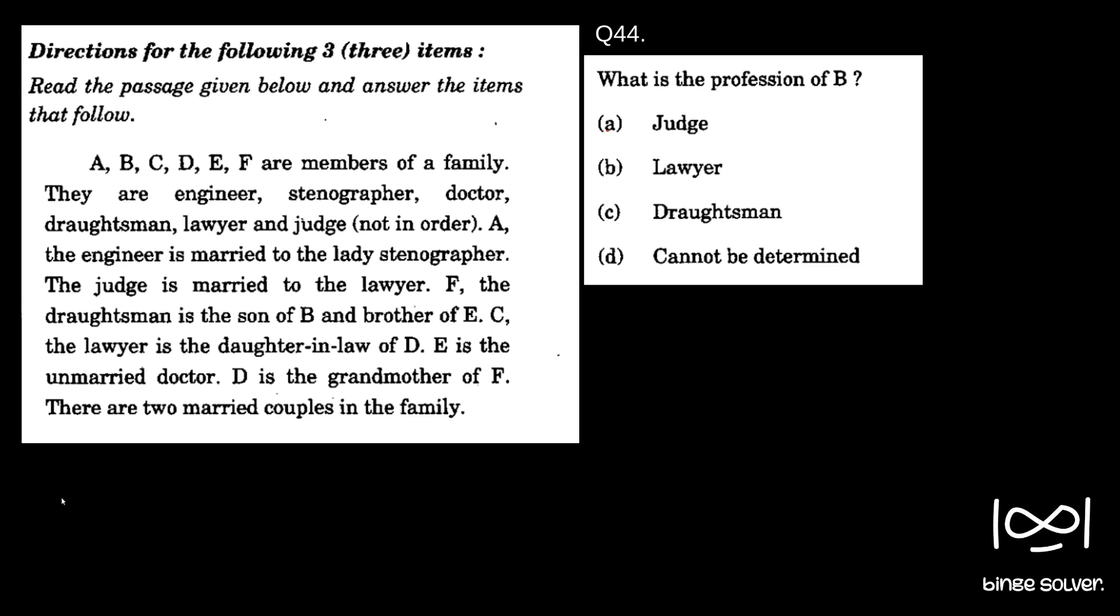The symbols I am going to use will be a square symbol to denote male, and a circle symbol to denote female. In case we have a married couple, I will denote it with an equal symbol. And in case we have brothers and sisters, I will use a single line to mark brothers and sisters.